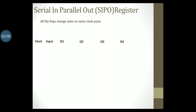Let us assume that before the application of the clock pulse, the values of Q1, Q2, Q3 and Q4 are 1 1 1 1 — that is, all the flip-flops are in the set state. Now let us say that I give a serial input of 0.